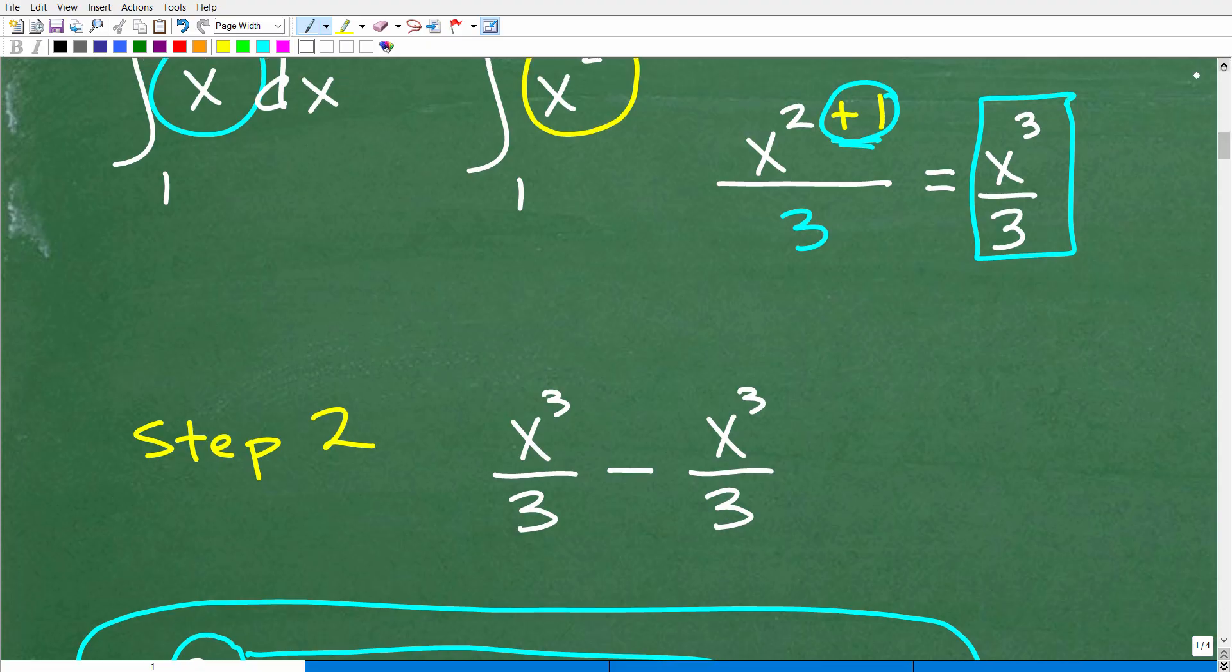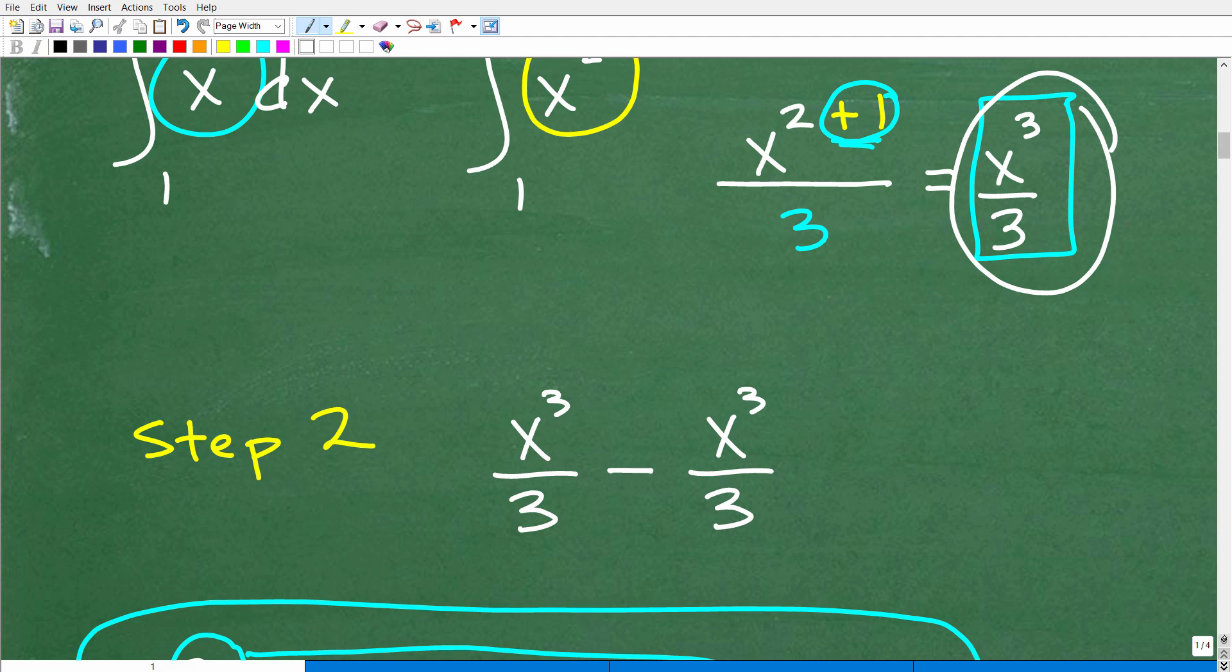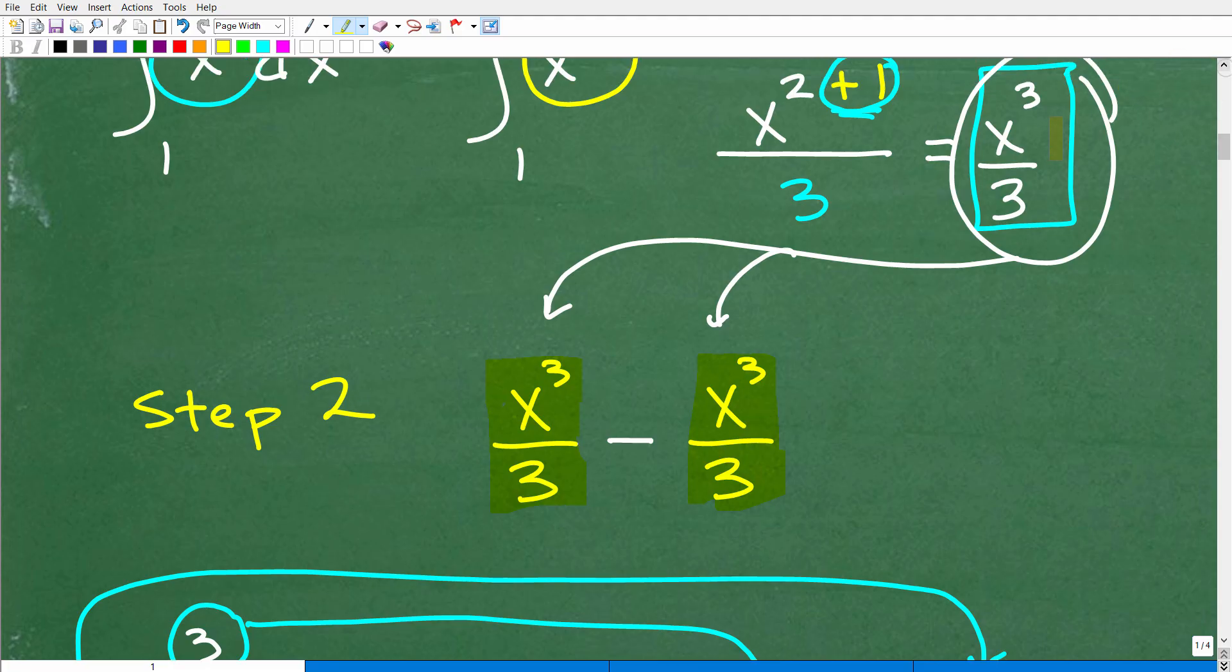Alright, now notice from step 1, the result was this thing, x cubed over 3. So what's step 2? Well, we're going to take our answer, our result, and we're going to subtract it from itself. Okay, I'll explain this here in a second. So just write this down, x cubed over 3 minus x cubed over 3. Okay, so you're like, oh, that's step 2. That's all it is. Okay, so when we have our result from this, we're going to subtract it from itself. Okay, so now let's move on to step 3.